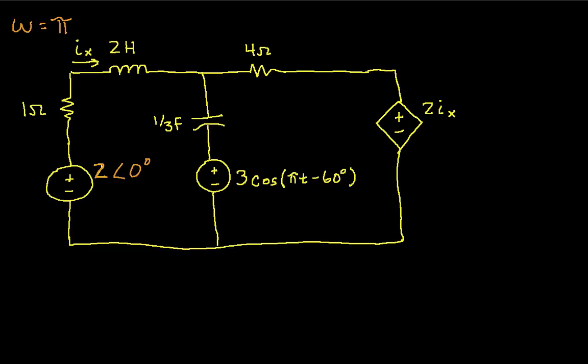Now we have 3 cosine pi T minus 60 degrees. So this one will be 3 at an angle of minus 60 degrees. So we've now converted the time domain cosines into phasors.